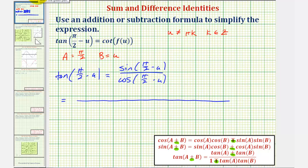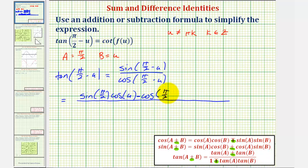For sine of the quantity pi over two minus u, we'd have sine a times cosine b, which is sine of pi over two times cosine u, minus cosine a times sine b, which is cosine of pi over two times sine u. For the denominator, cosine of the quantity pi over two minus u, we'd have cosine a times cosine b minus sine a times sine b, which is cosine of pi over two times cosine u minus sine of pi over two times sine u.